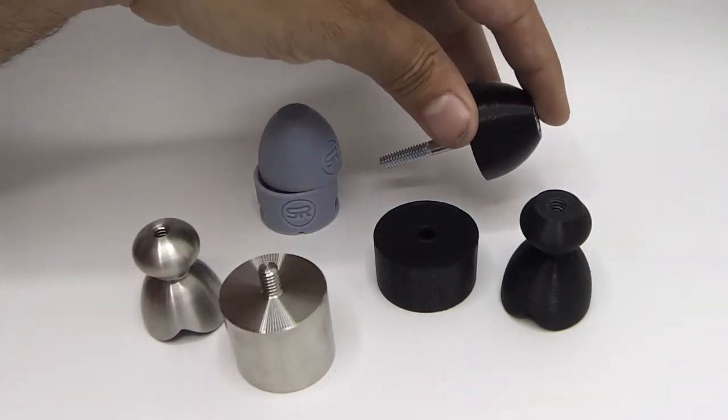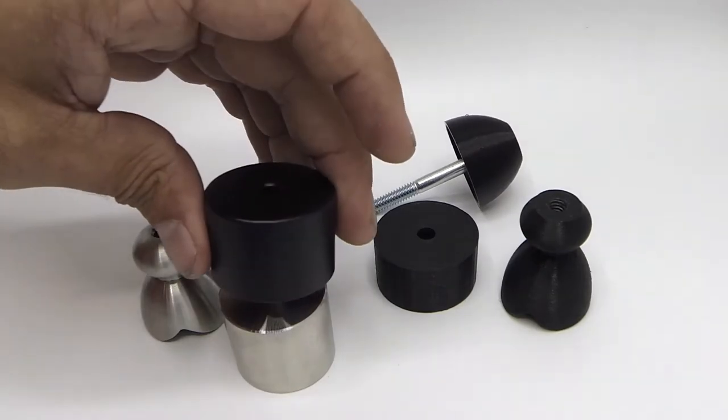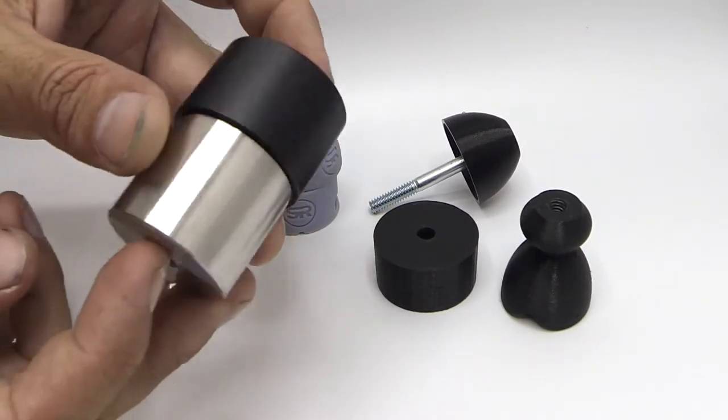Now we're going to take apart the standard weight set and show you the powder coated steel weight compared to the stainless weight.